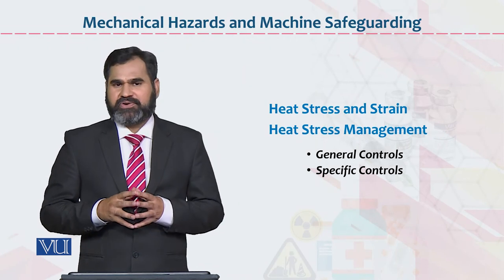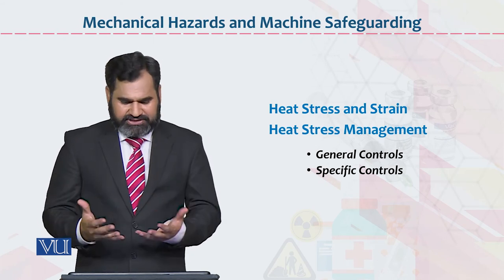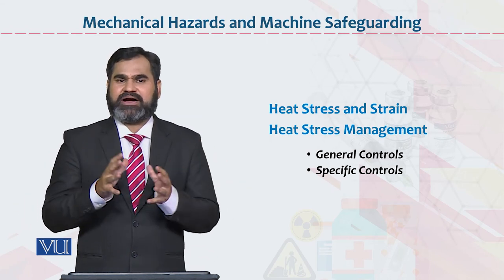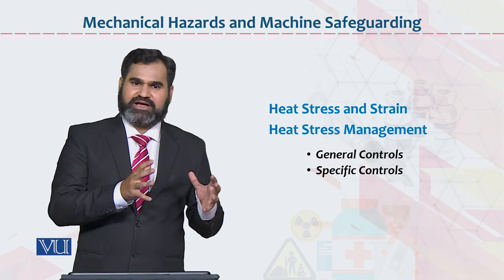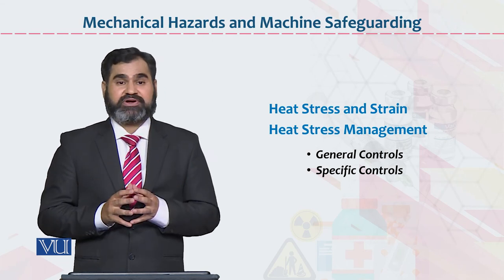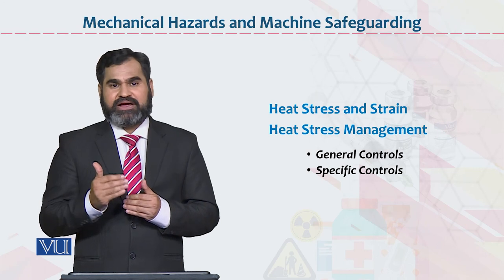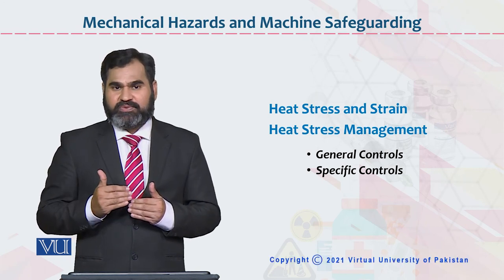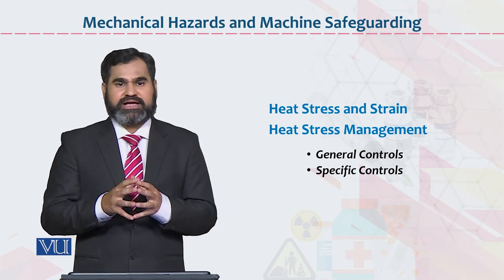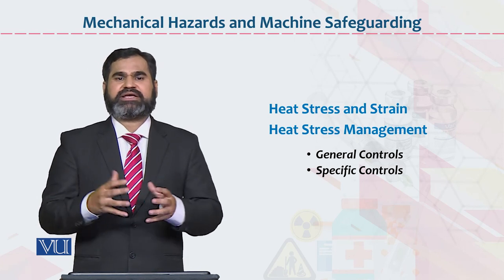Ab dear students, jo important concluding point hai woh yeh hai: heat stress management ke do usool hain — ya toh aap general control us pe rakhenge, ya specific control rakhenge. General mein generic hai: working environment comfortable zone mein hona chahiye, organization culture, organization safety, organization health, occupational health and safety — yeh sab cheezein SOPs ke mutabak honi chahiye. Specific control mein technical baat karenge: agar koi machine operate karte hue heat discharge ho rahi hai, to employee ne personal protective equipment pahne hone hain aur heat strain se bachne ke tamam SOPs follow kiye hone hain. Taake organizations ke SOPs ke mutabak rehte hue employee sahih tarike se kaam perform kar sake.